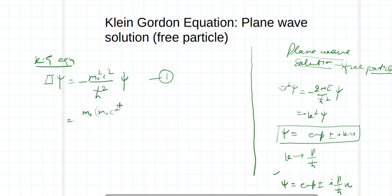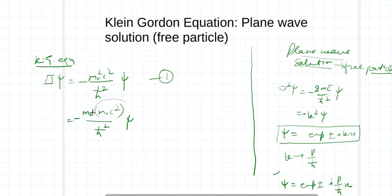The mass term can be re-expressed as m₀c squared divided by ħ squared, multiplied by ψ with a negative sign. As we know, m₀c squared is equivalent to energy, so this part of the Klein-Gordon equation looks identical to the corresponding term in the Schrödinger equation.